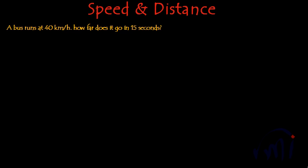What are we provided with? We're provided that a bus can run at 40 kilometers per hour. This is actually the speed of the bus. What is speed? Speed is distance traveled in unit time. And what is the distance here? Distance is 40 kilometers in one hour.